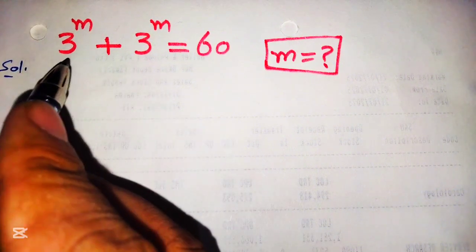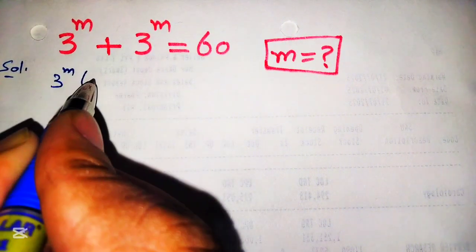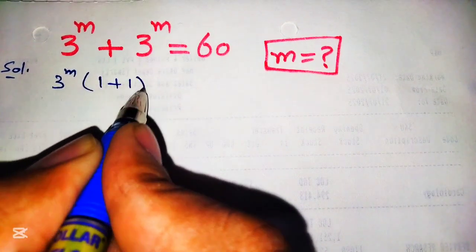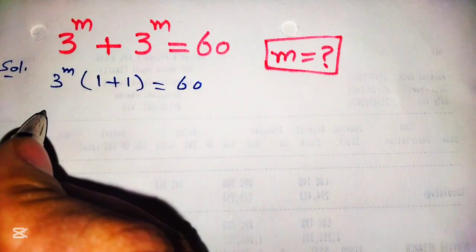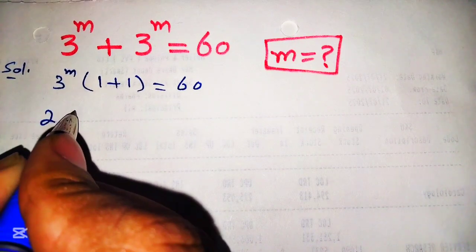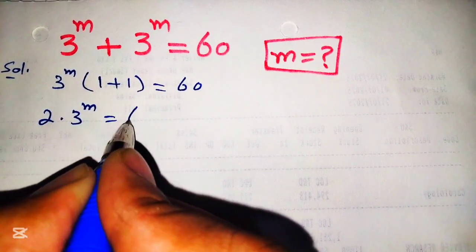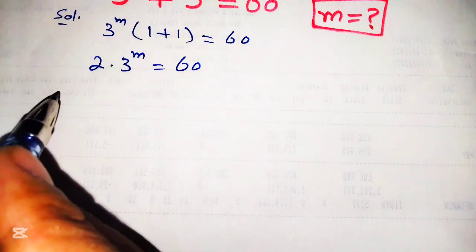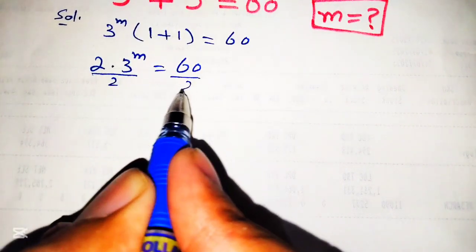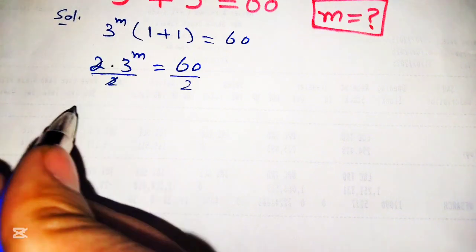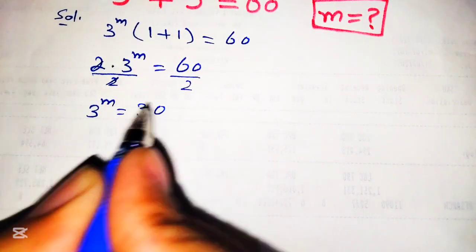First we will rewrite it by taking 3 raised to the power m common. This will become 3 raised to the power m into 1 plus 1 is equal to 60, and 1 plus 1 is equal to 2, so 2 into 3 raised to the power m is equal to 60. Now dividing both sides by 2, we get 3 raised to the power m is equal to 30.